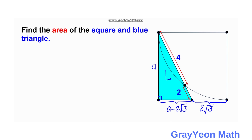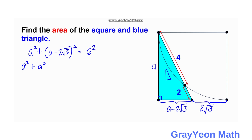We have formed a right triangle with two legs: a and (a − 2√3). We use the Pythagorean theorem to find the value of a. So we have a² plus (a − 2√3)² equal to 6², since the hypotenuse (the secant segment) is six.